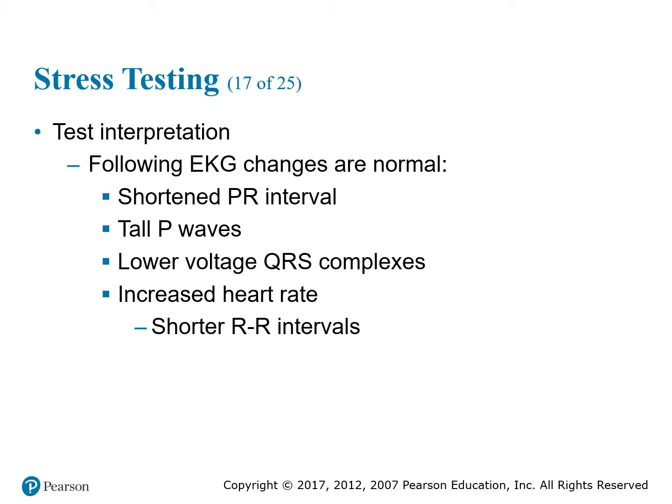You might also see tall P waves, often a result of increased lung capacity — the more you work out, the more your lungs fill up with air to get more blood flow into your heart. Increased heart rate is reflected in shortened R-to-R intervals. The ability of the heart rate to increase with exercise is known as chronotropic reserve. A heart rate that does not increase with stress is chronotropic incompetence.